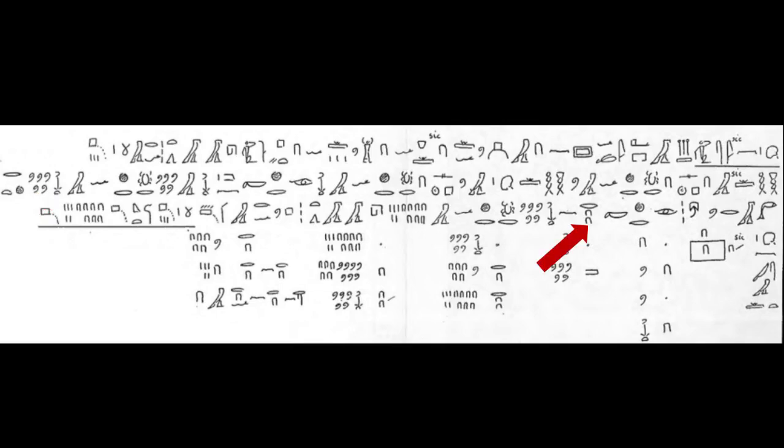Take one twentieth of a thousand five hundred. It makes 75. That is the content in hundreds of quadruple Hekat.